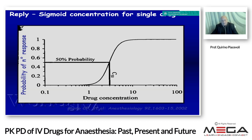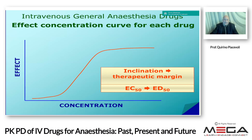Here we have a curve showing the probability of patient responses — in this case a 50% probability — and we can change this probability by changing the drug concentration. There is an effect-concentration curve for each drug because it is typical and different for every drug. If we modify one of these parameters, we change the slope and therefore the therapeutic margin. We can go from a C50 to an ED50, and this is important to know well.